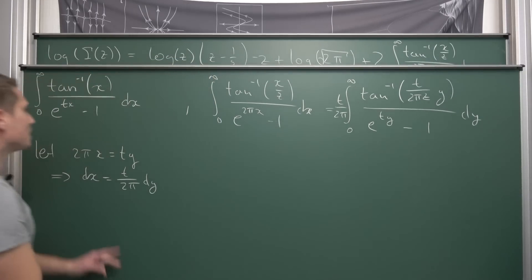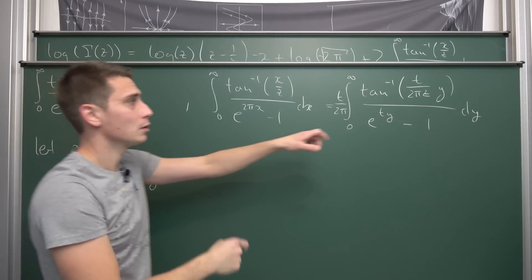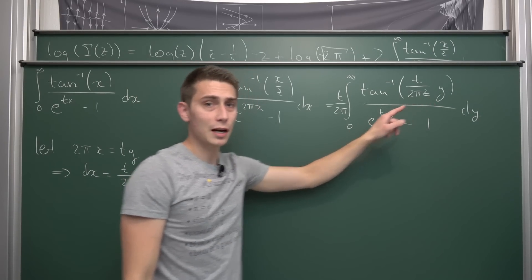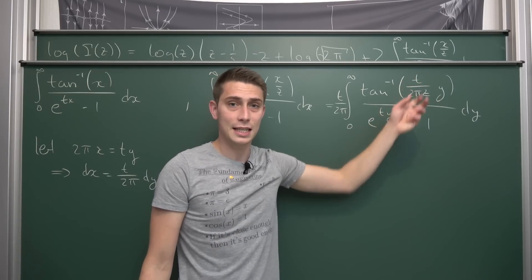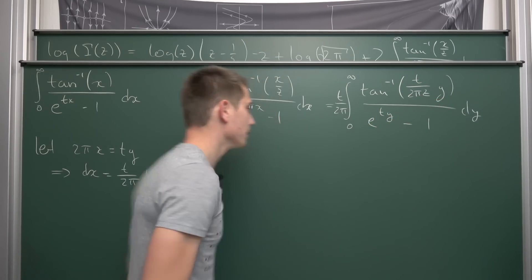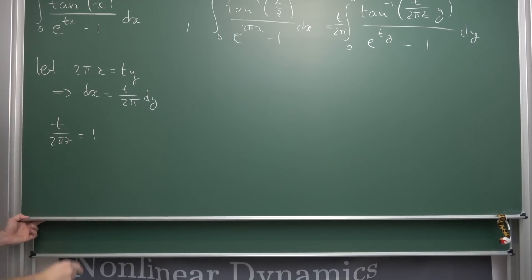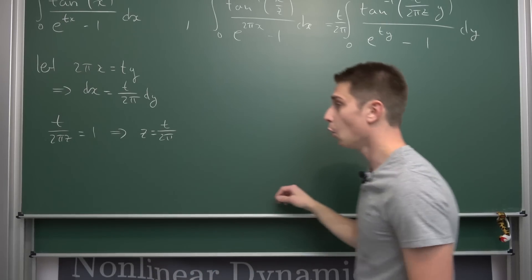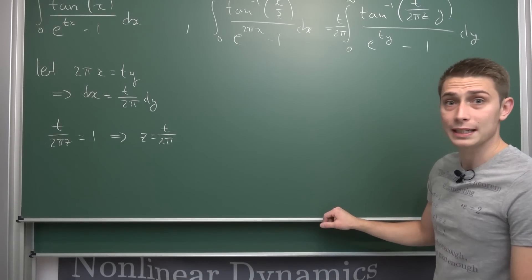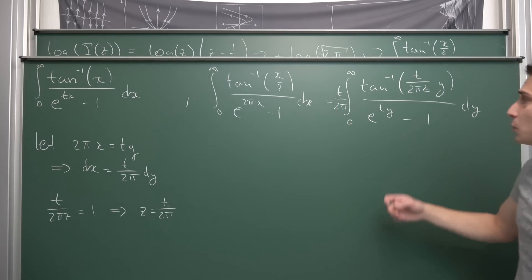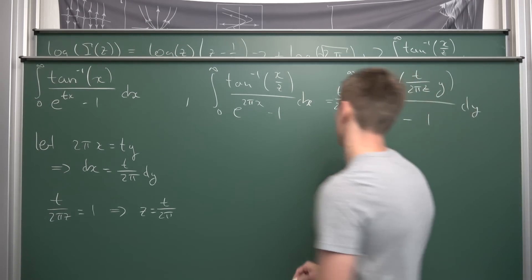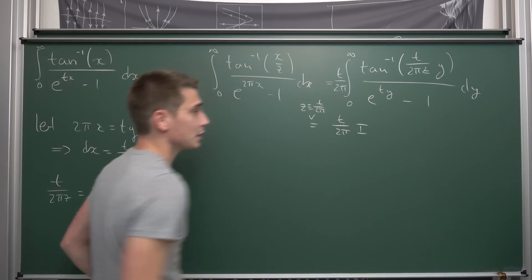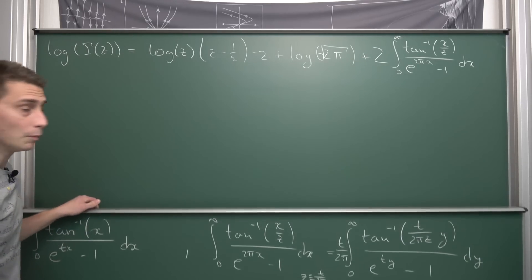This integral we now have is basically just the target integral, but we still need to plug a value for z in such that we get a single-variable inverse tangent. We need t over 2πz equal to 1, so that we only have y inside the arctangent. This means z equals t over 2π. We plug this value into Binet's second formula for log gamma, and then we are basically already done by solving for our desired integral, because the integral on the right-hand side is exactly the one we seek, multiplied by a factor of t over 2π.